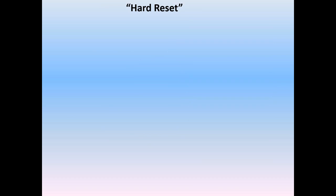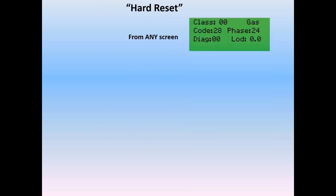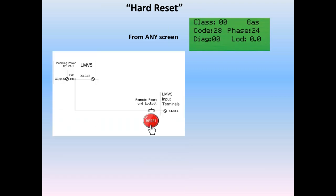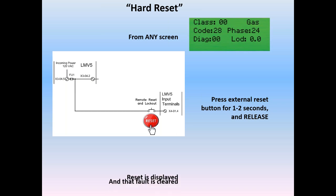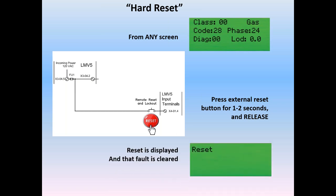The alternative is to do a hard reset from any screen — any screen. You can press an external reset button for one or two seconds and release, and the fault is reset on the screen and the fault is cleared.